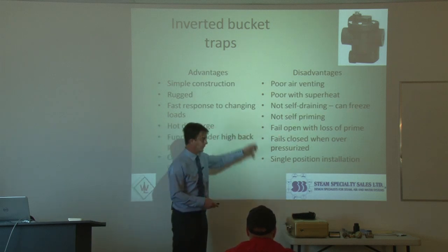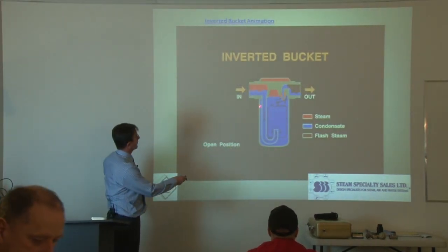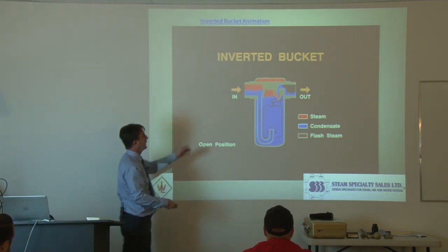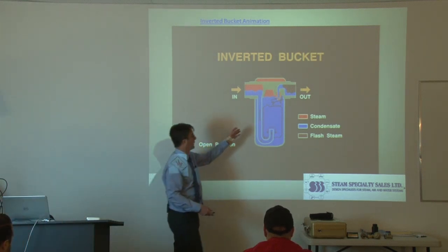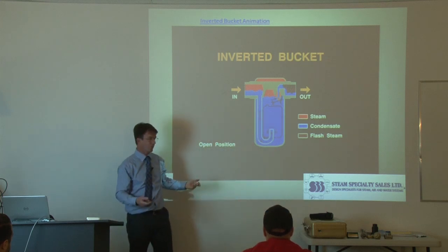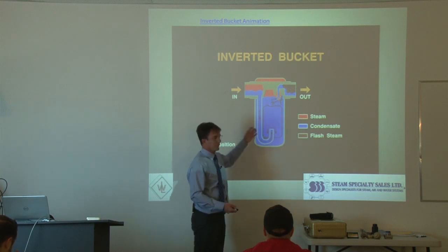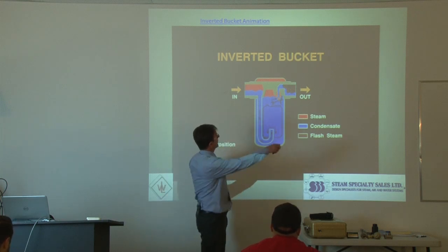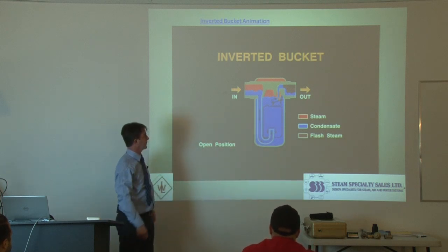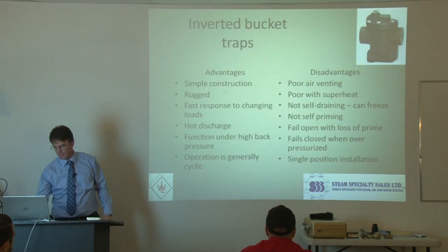They are also not self-priming, which means if the condensate inside is flushed out, they'll start leaking steam even though they're still in perfectly good mechanical operation. The fix, if a trap has lost its prime, is to shut the isolation valve on the outlet for a couple of seconds, let the trap fill up again, and it's back in operation. It doesn't happen that often, but you can lose the prime inside the trap.